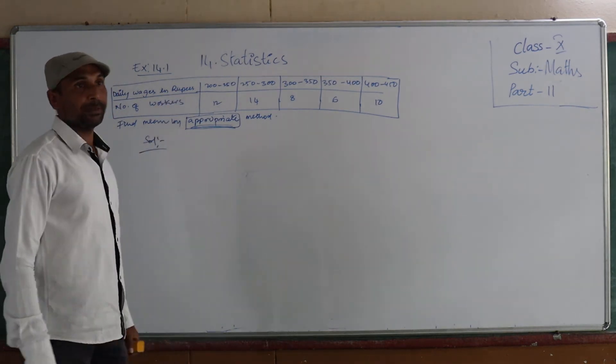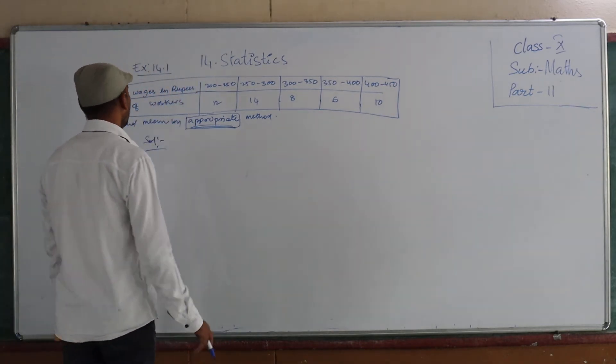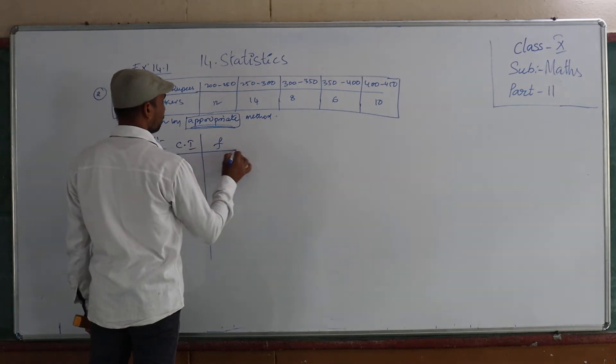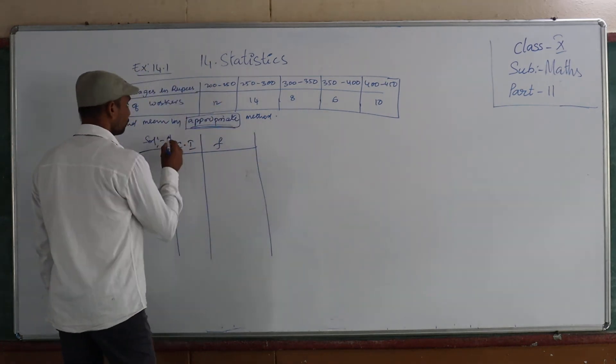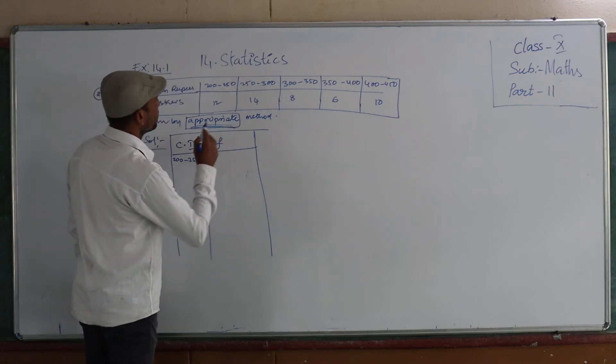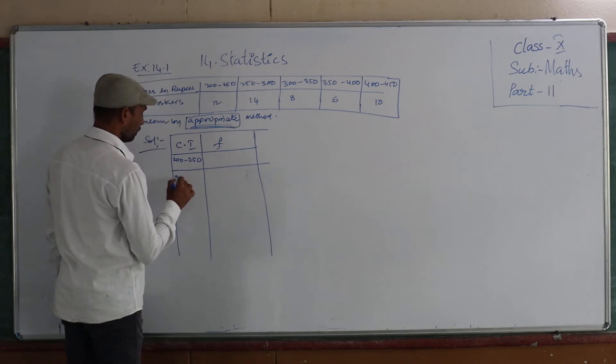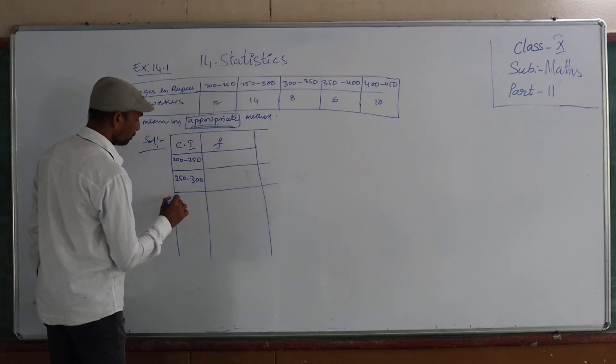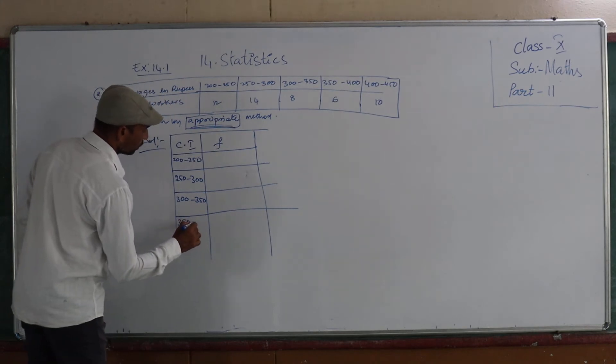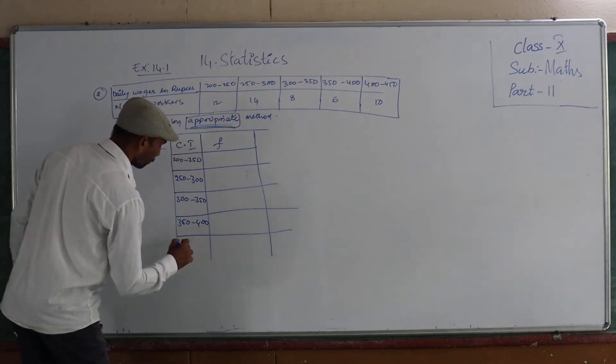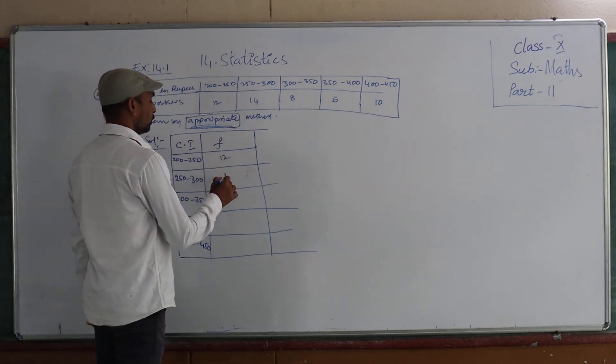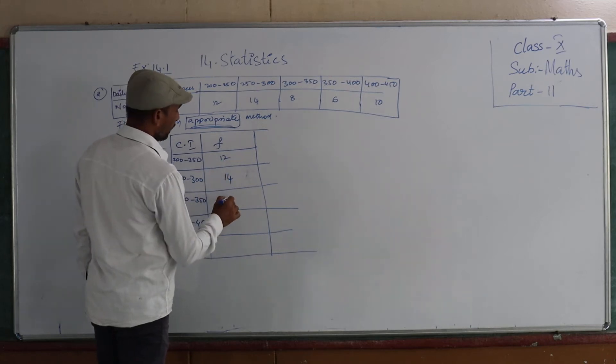Solution. First we have to prepare and make a table for the calculation method. Then the first one I am taking as class intervals. Then the second one I am taking as fi, nothing but frequency. So what is class intervals? 200 to 250, 250 to 300, 300 to 350, 350 to 400, then 400 to 450. Then frequency: 12, 14, 8, 6, 10.